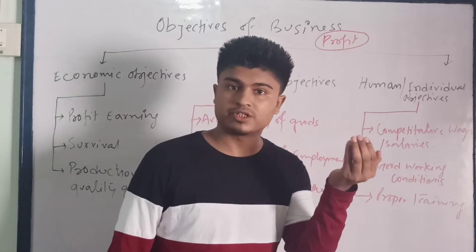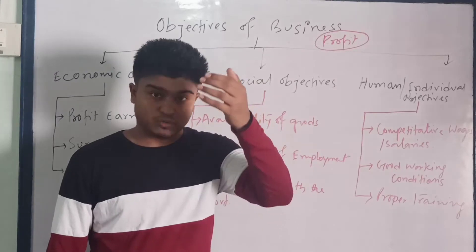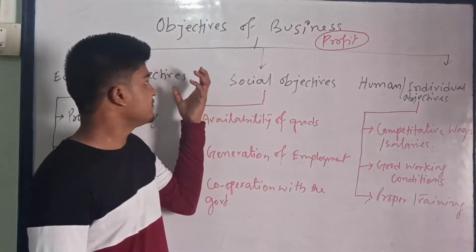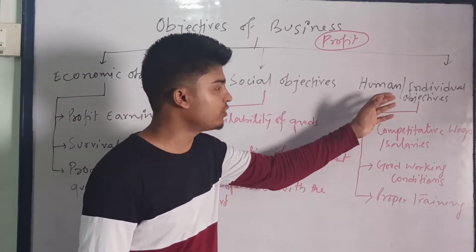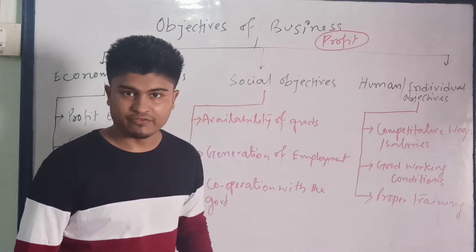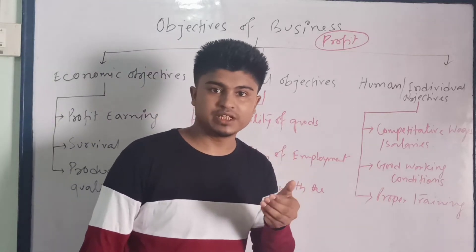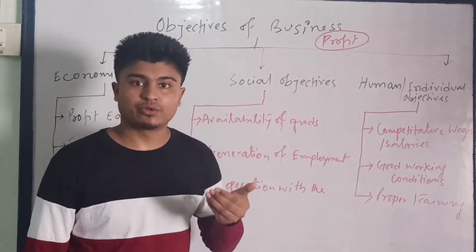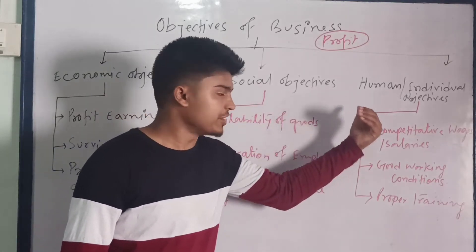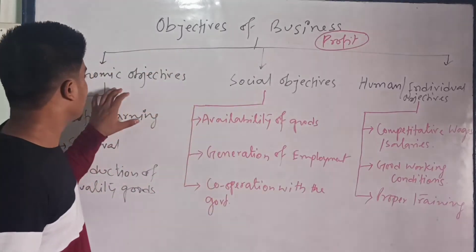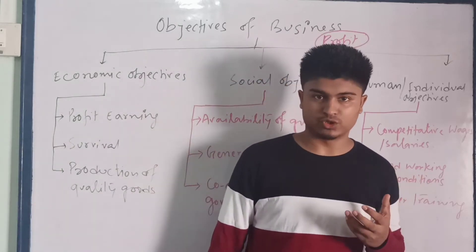On the basis of various aspects — social concern and personal or human concern — the objectives of business are divided into three categories: first, economic objectives; second, social objectives; and third, human or individual objectives. We will first see the meaning of each, then look at the sub-objectives or activities undertaken under each.